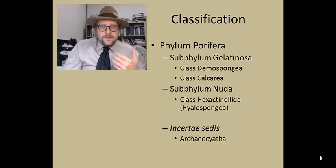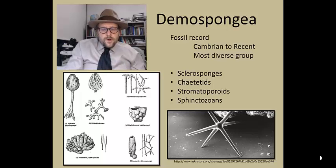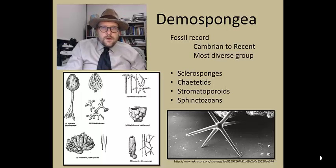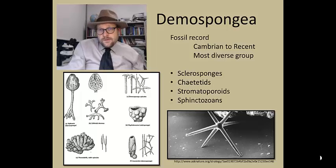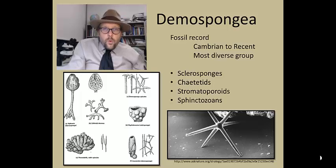The Demospongia is the most diverse group, with a fossil record that goes back to the Cambrian. They are recognized by their fossilized spicules, although body fossils have also been found. They include sclerosponges, the coralline sponges, the stromatoporoids, and the sphinctozoans.